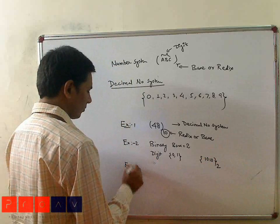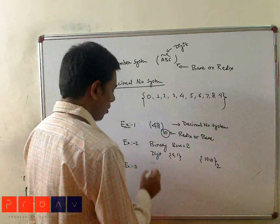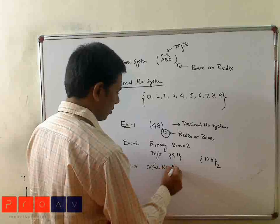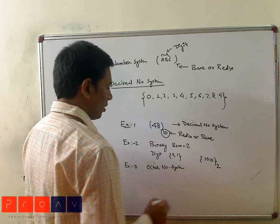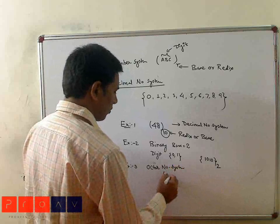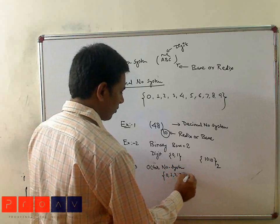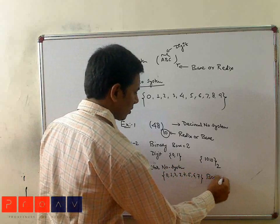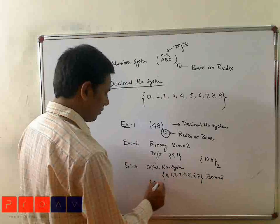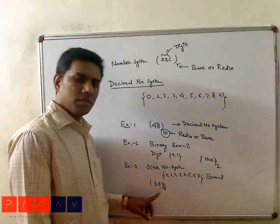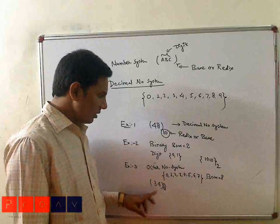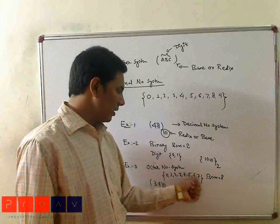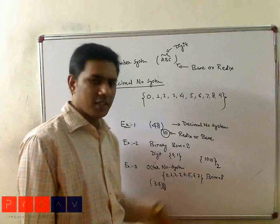Third is the octal number system. Octal means our digits are 0, 1, 2, 3, 4, 5, 6, and 7. For example, 34 with base 8 is called the octal number system. In the octal number system, we adopt only digits 0 to 7, and the base is 8.